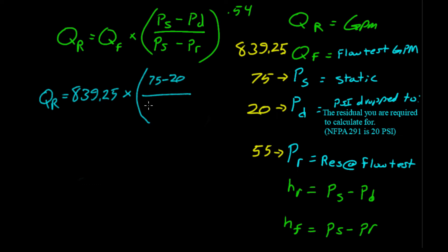PS is our static pressure was 75 minus PR was our residual pressure at flow test, 55 to the power of 0.54 PS minus PD. So, 20 from 75 would be 55 over and 55 from 75 is 20. We're going to come back to that in a minute.